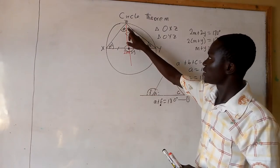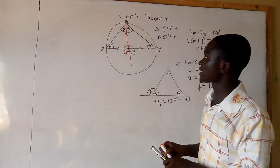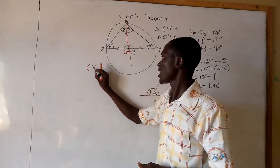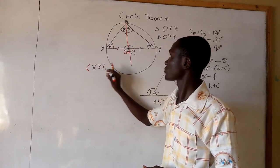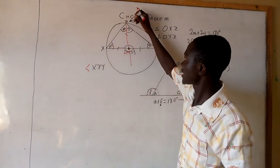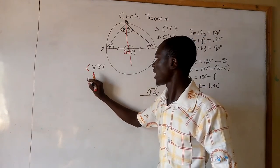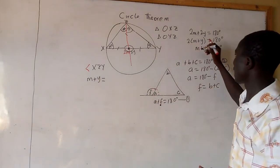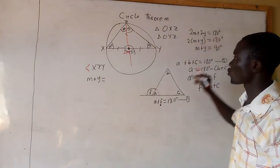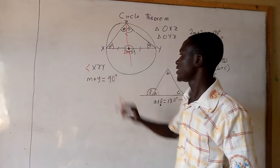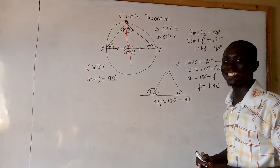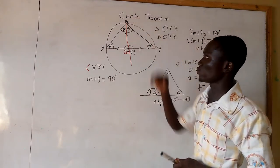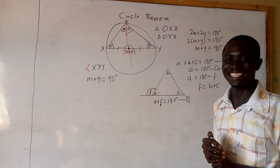Now, from the diagram, look at angle XZY. Angle XZY is equal to angle M plus angle Y. And here we have angle M plus angle Y equal to 90 degrees. This shows that the angle the diameter subtends at the circumference is equal to 90 degrees.